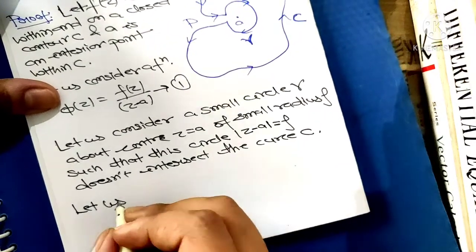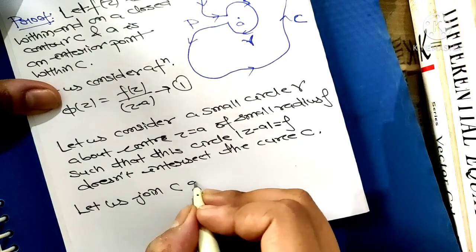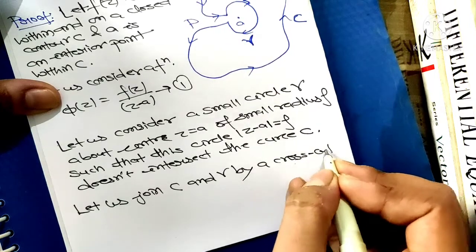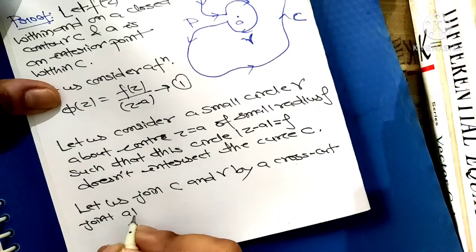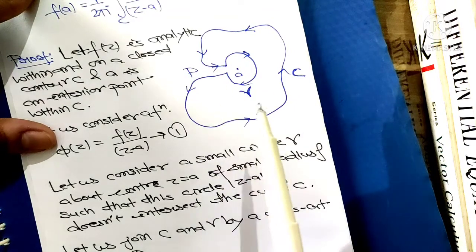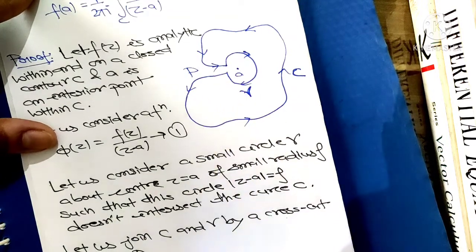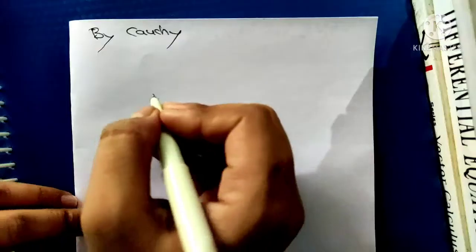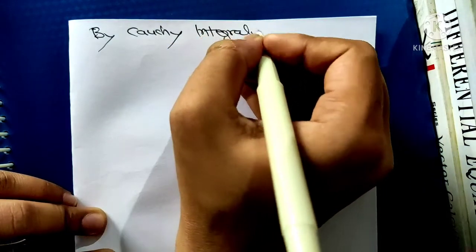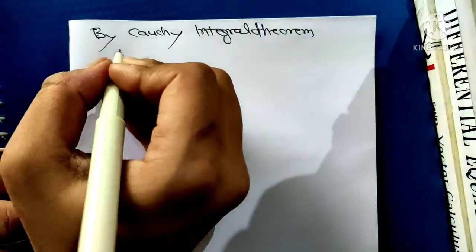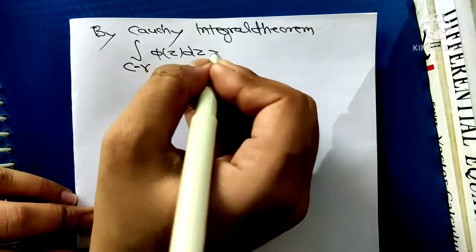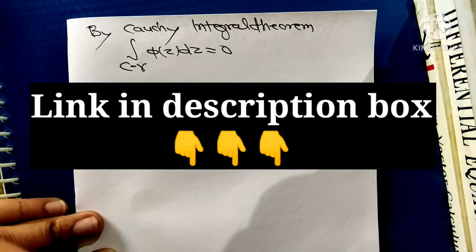Let us join capital C and gamma by a crosscut, joined at point P. I have already constructed the closed contour C and gamma inside it, with the crosscut P. By Cauchy's integral theorem, we can write the integral over C minus gamma of φ(z) dz equals 0.